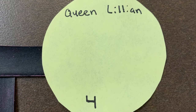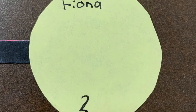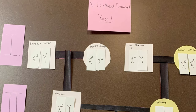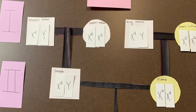Now we're going to talk about the phenotype we're actually looking for. The individuals shaded in yellow — as seen with Queen Lillian, Fiona, and Felicia — are the ones that carry the trait, which is blue eyes. Everyone who is not shaded is going to have brown eyes.